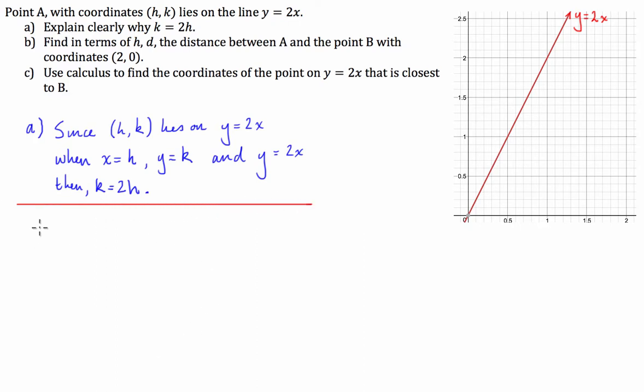So what is the next part of the question asking us to do? Find in terms of h, d, the distance between A and the point B with coordinates 2, 0. Okay, so I'm guessing that's why we've got this graph here. So 2, 0 is here and this is the point B and we have to find the distance between A, which I'll make a different colour. Let's just say A is here. So A has coordinates h, k. So we have to figure out the distance between these two points in terms of h.